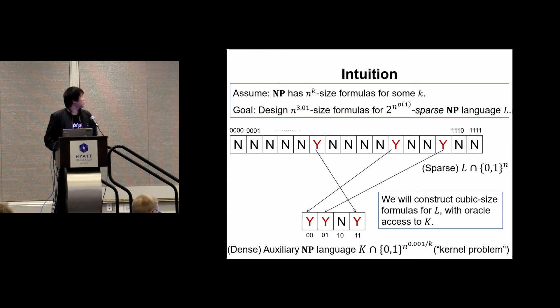Then we'll somehow construct a very small formula for L using some K oracle gates. Then we'll use the assumption that NP has n^k size formulas to implement these K oracle gates using very small formulas. This will blow up the size of the construction by only an n^epsilon factor. So our final construction will have size slightly bigger than n^3. This is the intuition. It's basically a kernelization idea. It's not exactly what we'll do, but it's what it's going to look like.